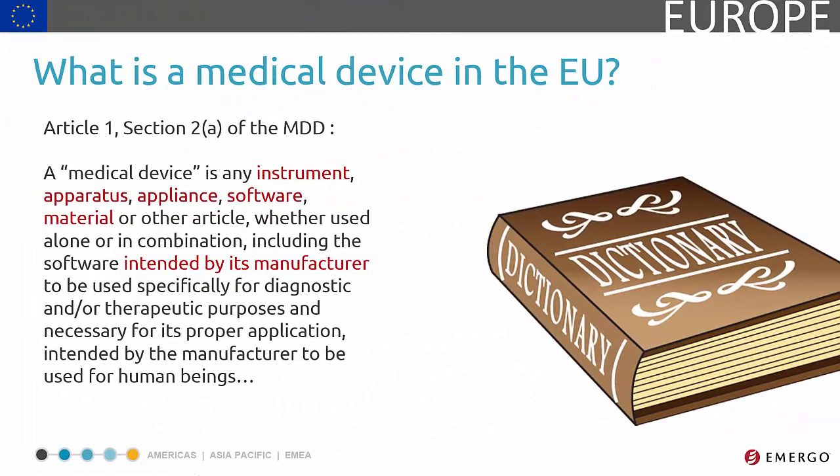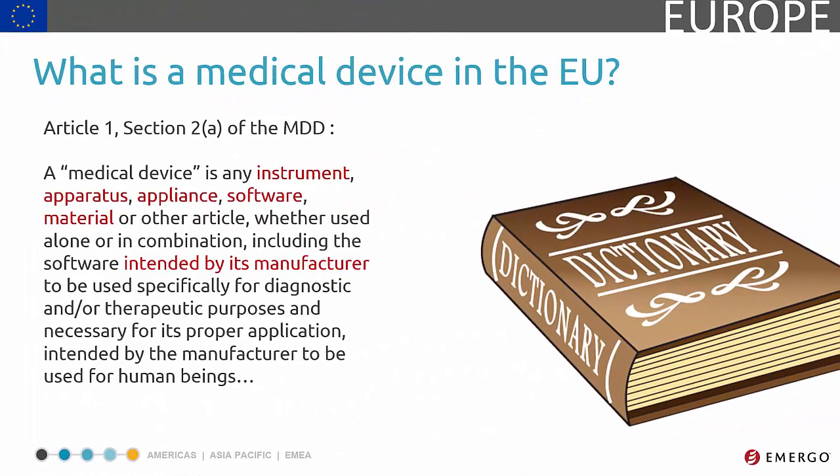This page displays an excerpt from the official definition from Article 1, Section 2A of the Medical Devices Directive. The short version: a medical device is something used to diagnose, prevent, monitor, or alleviate a disease.